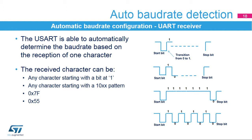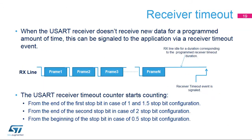In parallel, another check is performed for each intermediate transition of the RX line. The USART supports a receiver timeout feature. When the USART doesn't receive new data for a programmed amount of time, a receiver timeout event is signaled and an interrupt is generated if enabled. The USART receiver timeout counter starts counting from the end of the first stop bit in case of 1 and 1.5 stop bit configuration, from the end of the second stop bit in the case of 2 stop bit configuration, and from the beginning of the stop bit in case of 0.5 stop bit configuration.